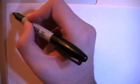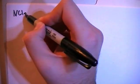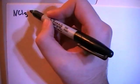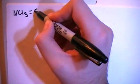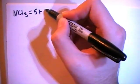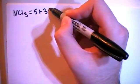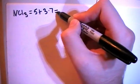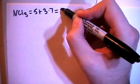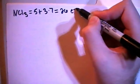This is going to be NCl3 nitrogen trichloride, which is going to give us five valence electrons from the nitrogen plus three chlorines each with seven valence electrons for a total of 26 valence electrons.